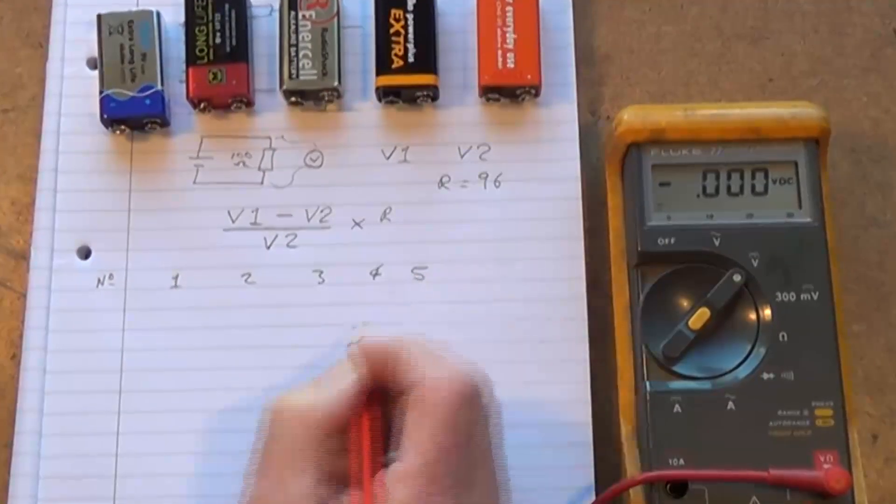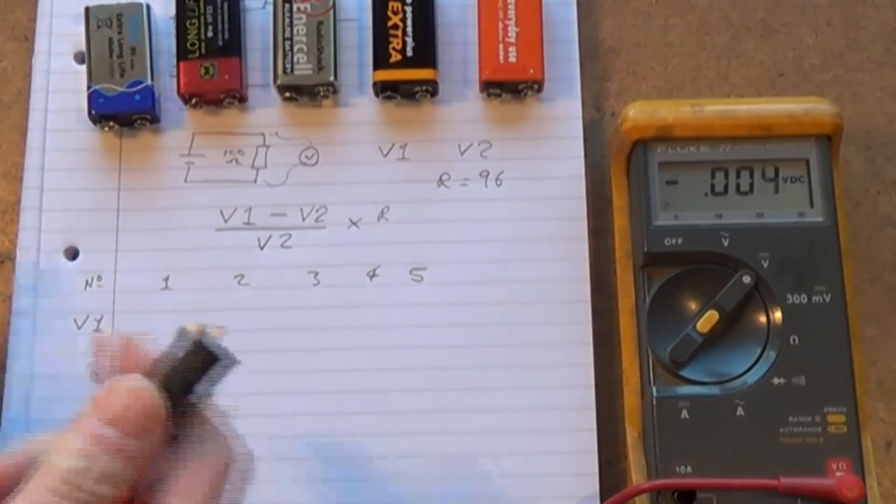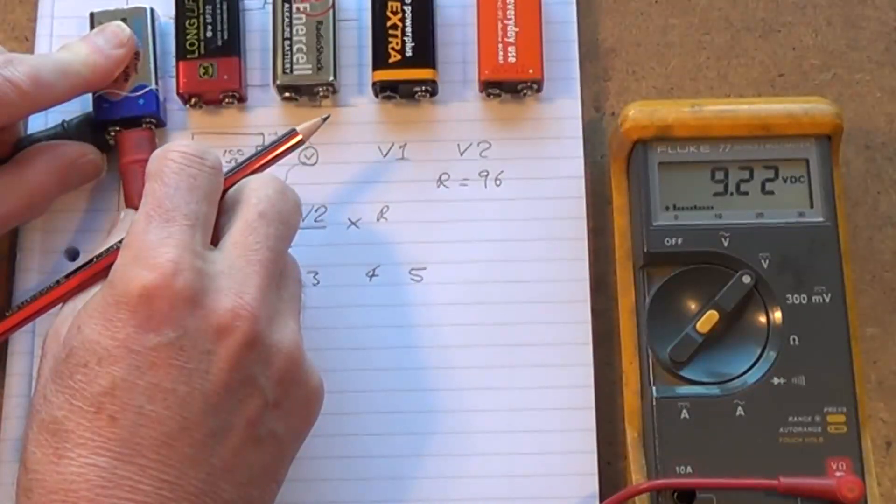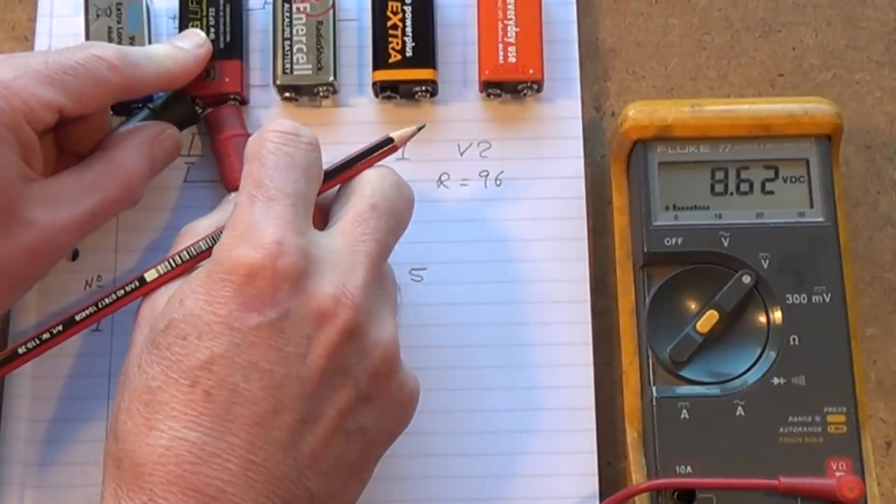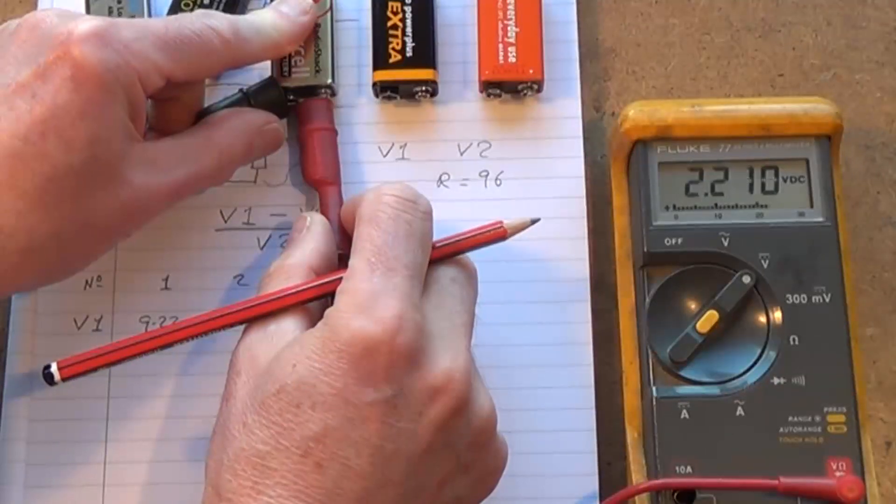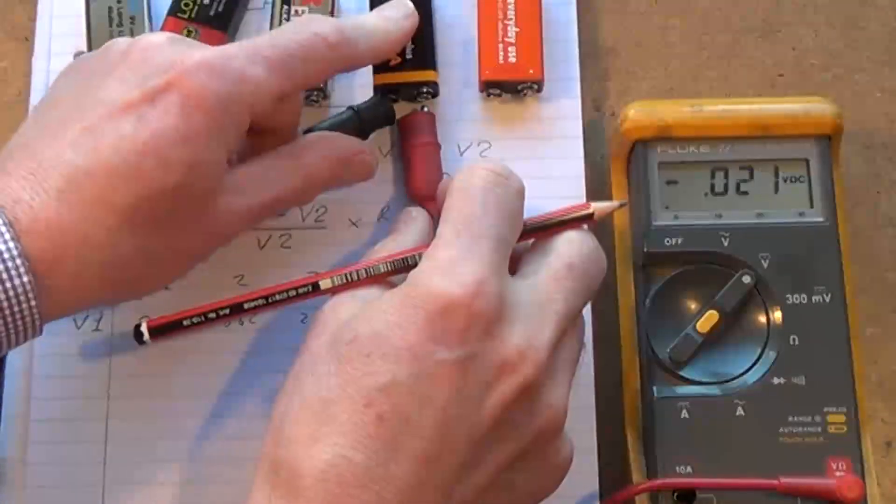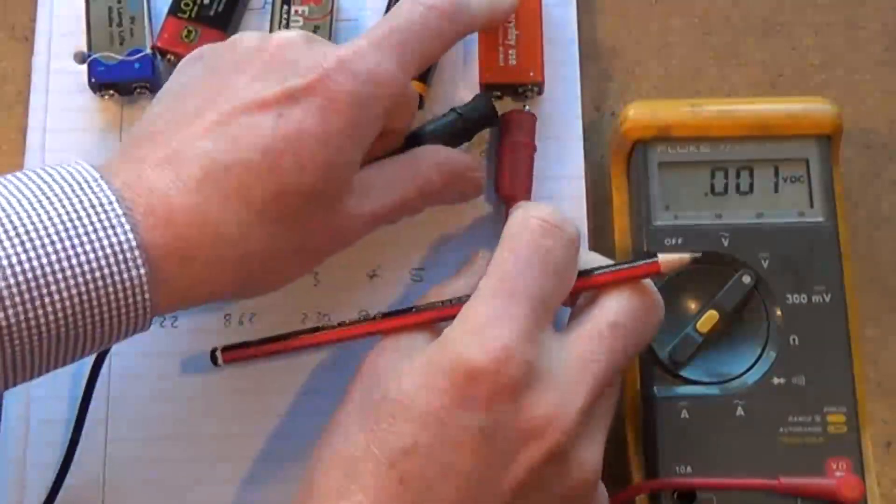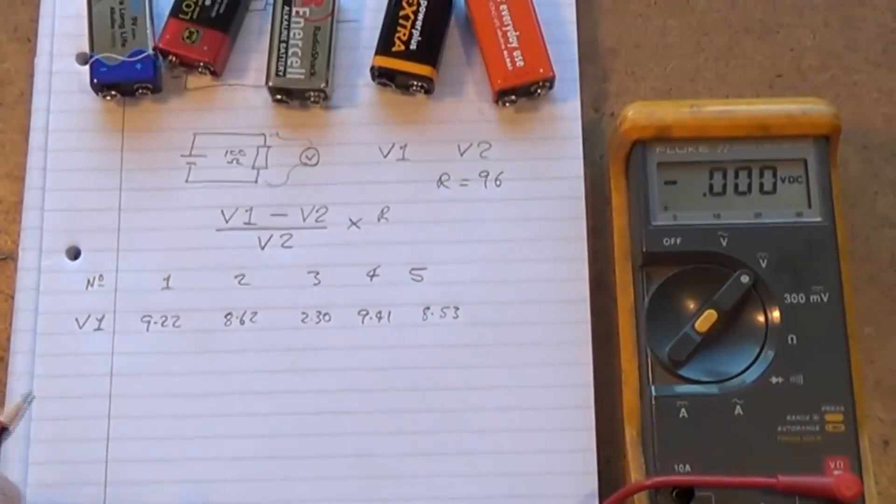Then we'll take the V1 reading for each of them. So now I'm just going with the meter straight across the battery. That's 9.22, 8.62, 2.30, 9.41, and 8.53.